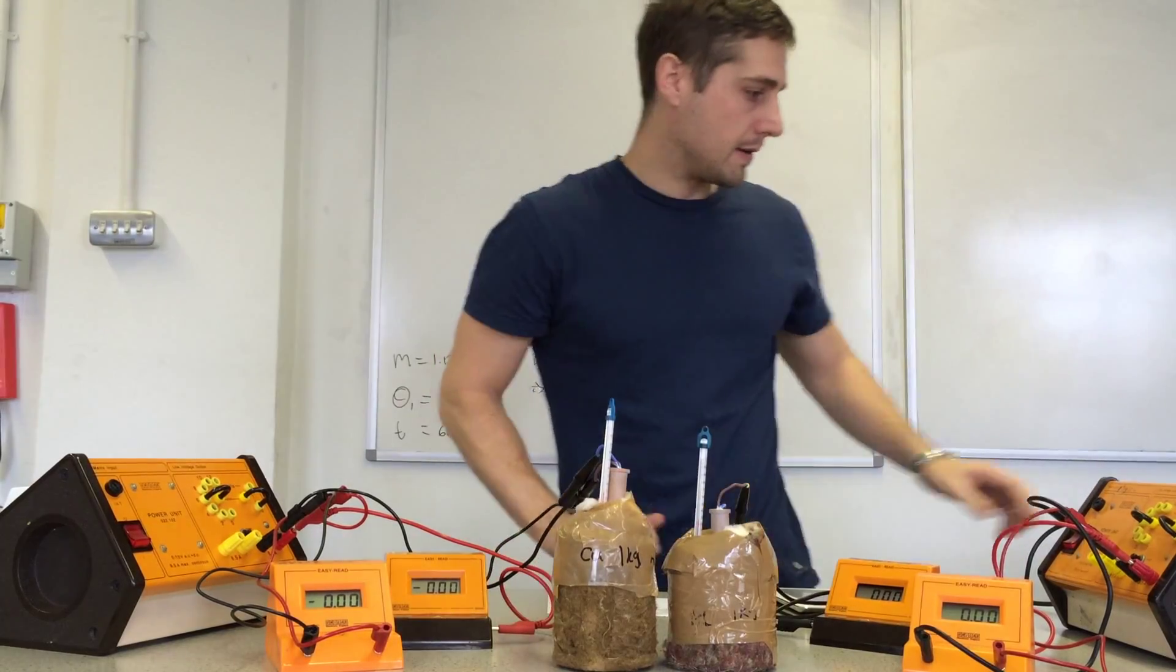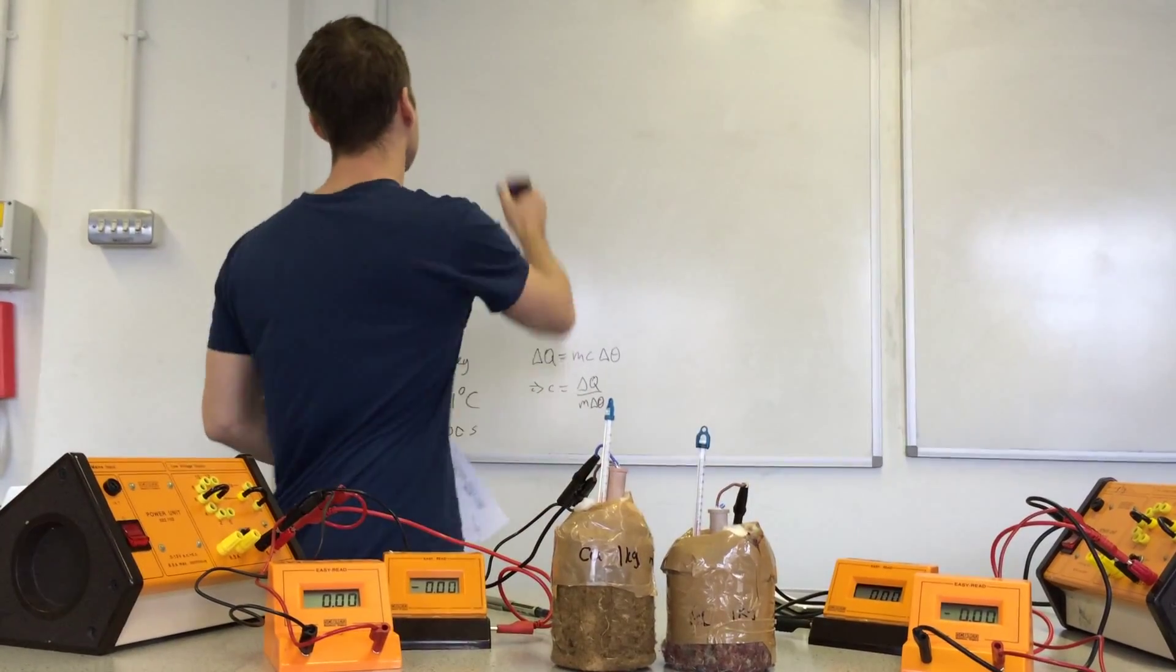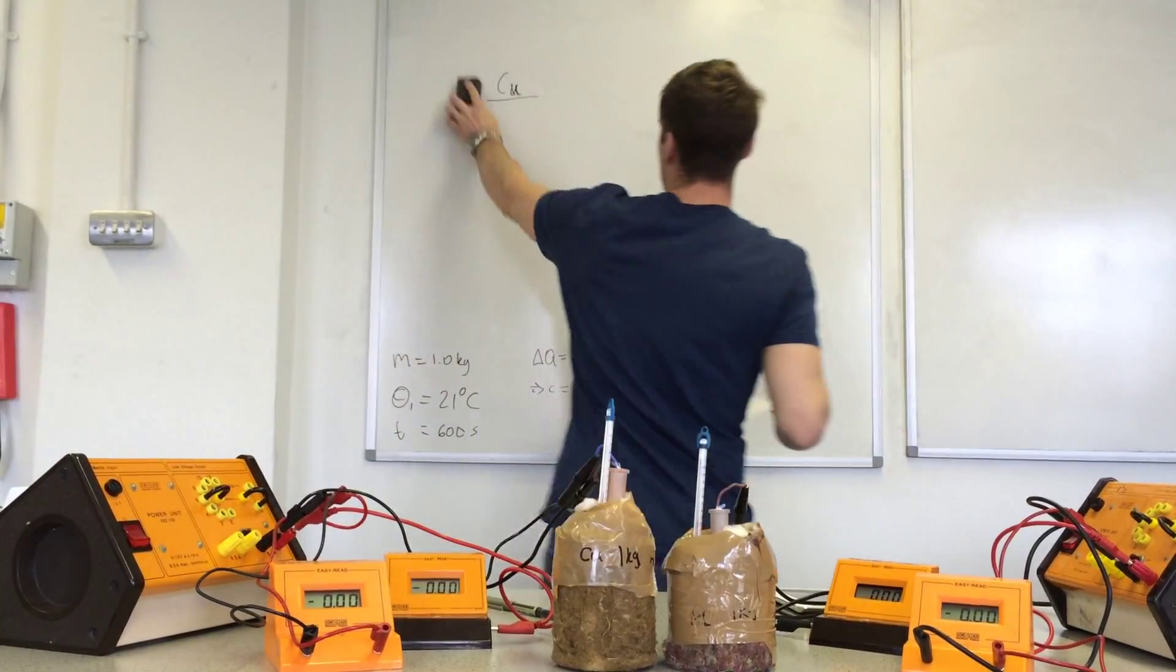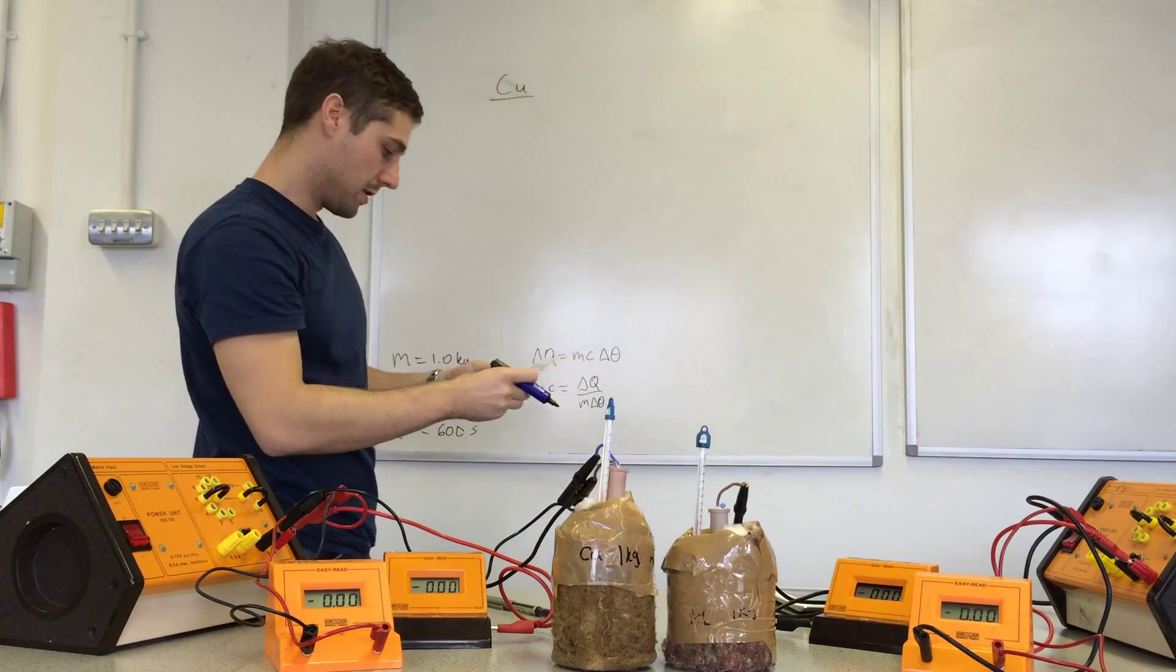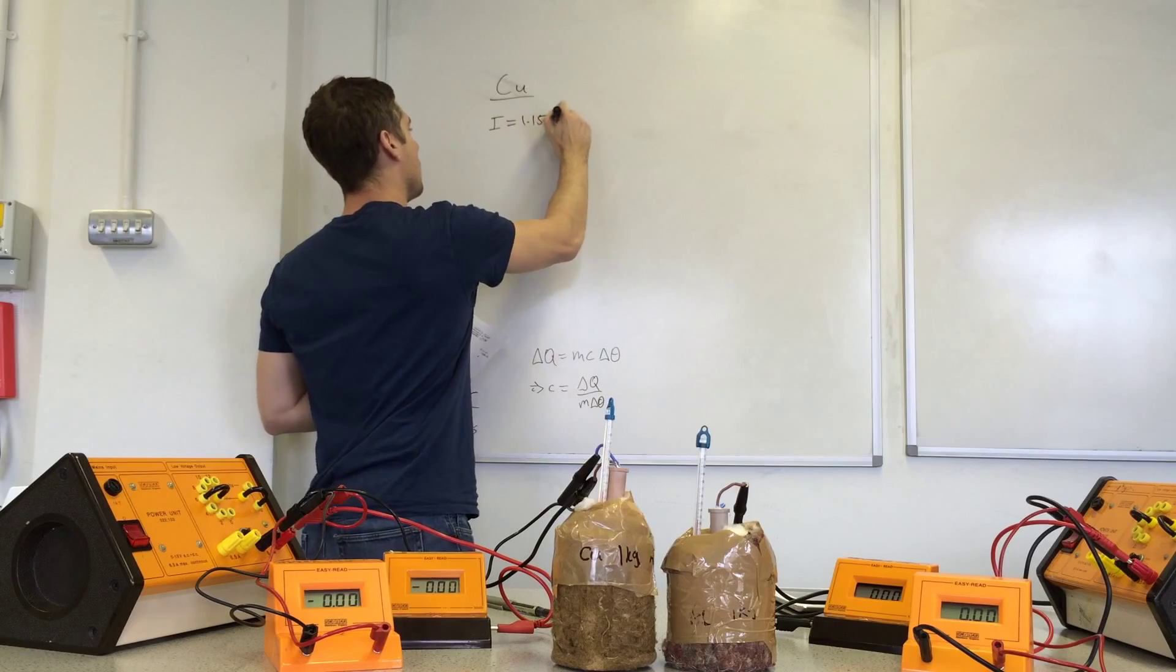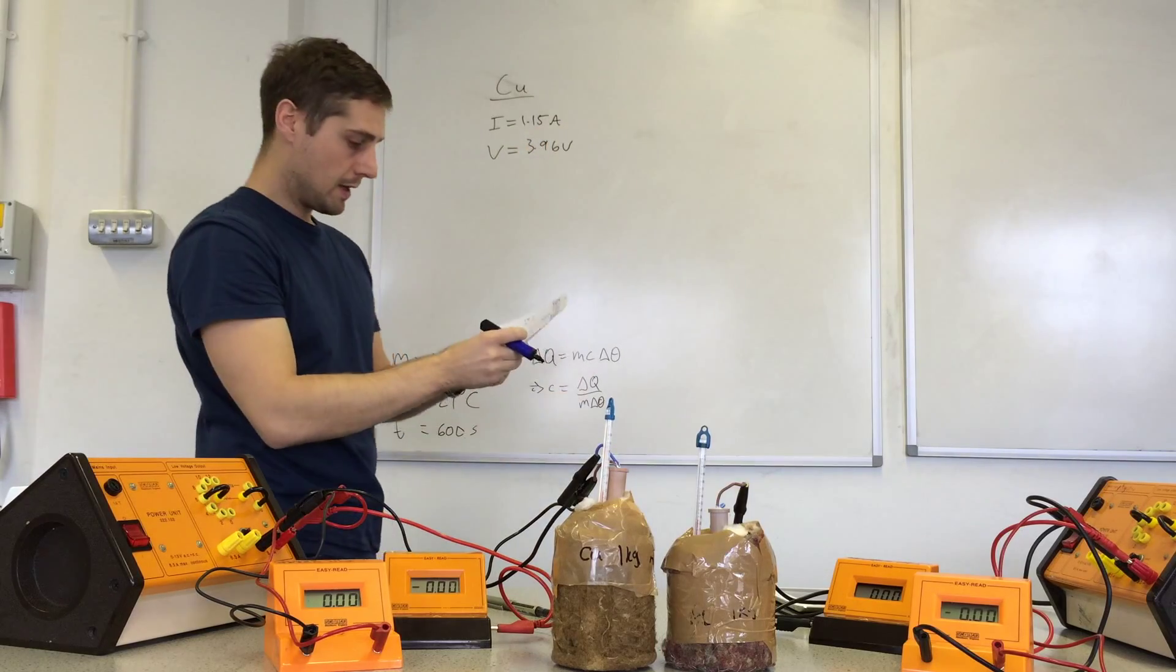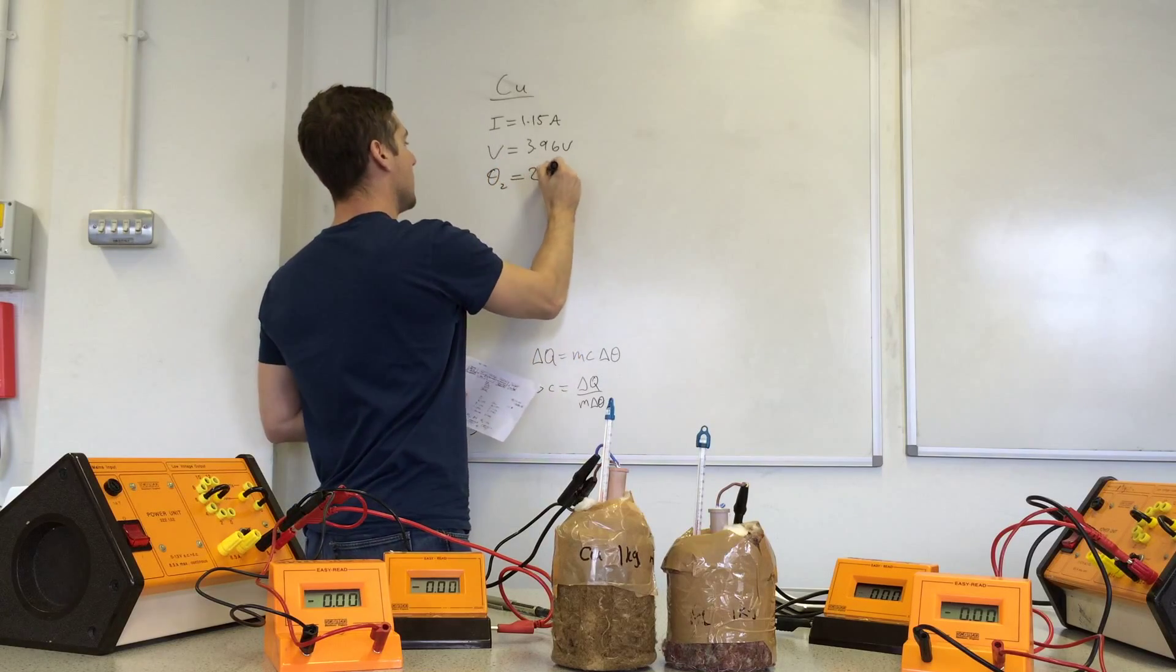Alright, so we've got our data now. Data for the copper block: the average current was 1.15 amps and the voltage 3.96 volts. Theta 2, 29 degrees C.